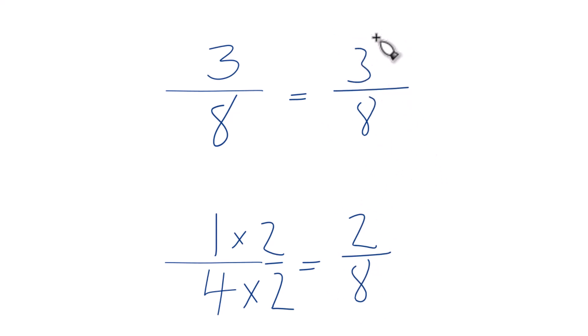So 3, that's larger than 2, so 3 eighths is larger than 2 eighths. And since 2 eighths and 1 fourth are the same, 3 eighths is larger than 1 fourth. This is Dr. B, and thanks for watching.